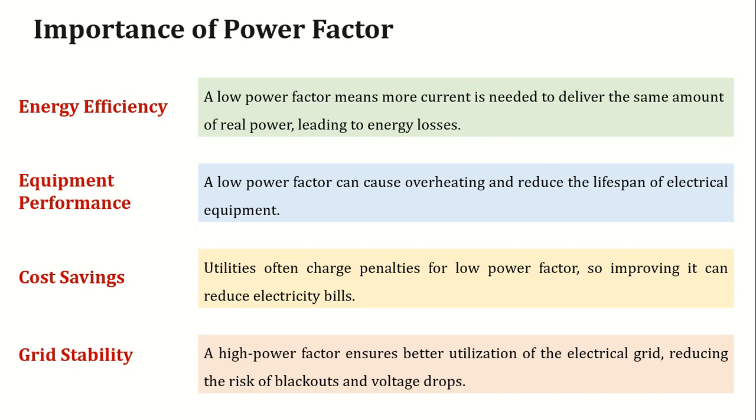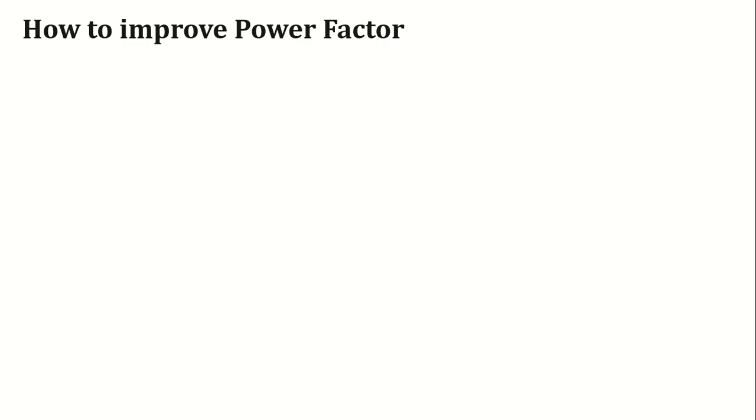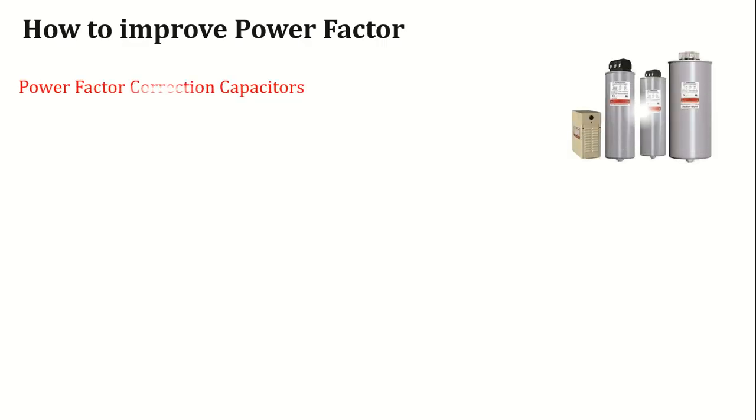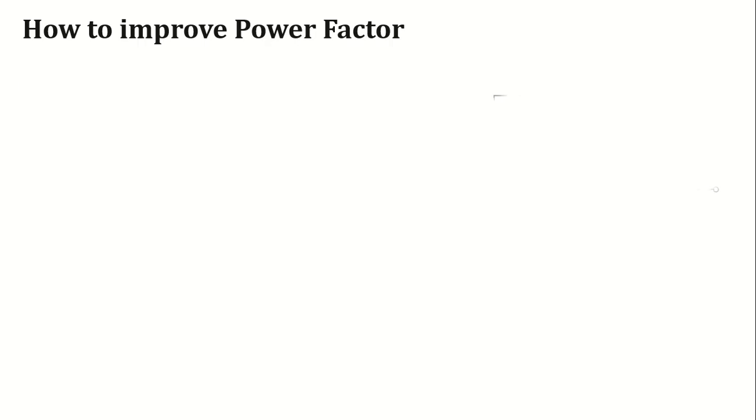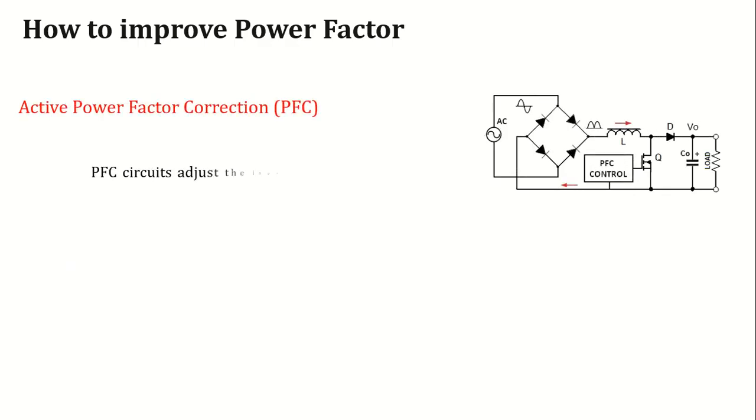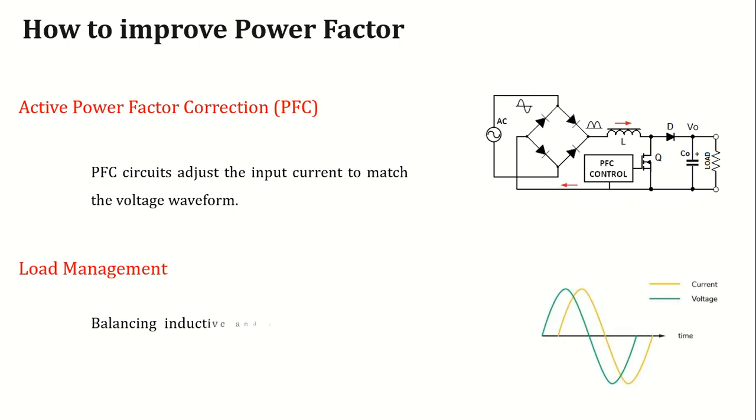Next I will shortly discuss the techniques to improve power factor, resulting in increased efficiency and cost savings. The first way is to use power factor correction capacitors. Capacitors are added to the system to counteract the lagging power factor. Next comes synchronous condensers. These are rotating machines that provide reactive power to improve power factor. At number three comes active power factor correction PFC. Used in electronic devices, PFC circuits adjust the input current to match the voltage waveform. The last we can do is proper load management. Balancing inductive and capacitive loads can help maintain a high power factor.